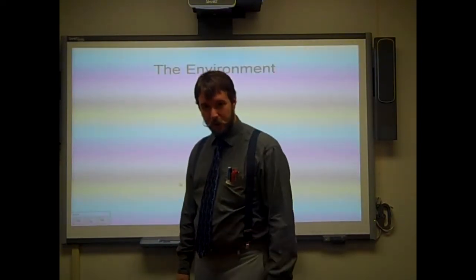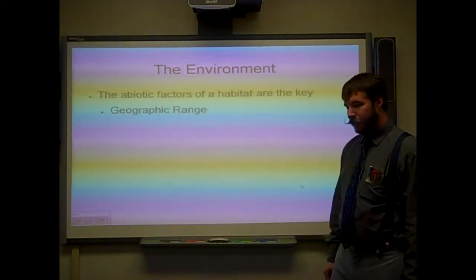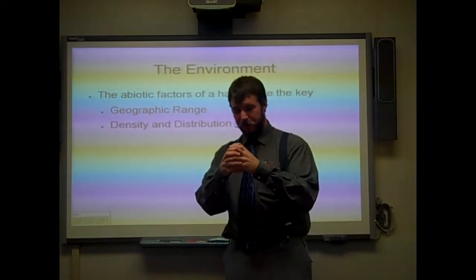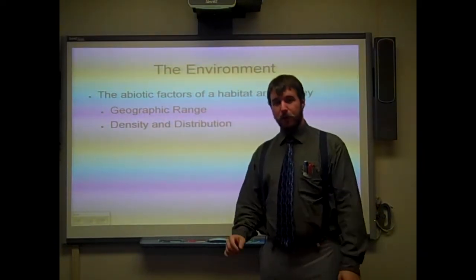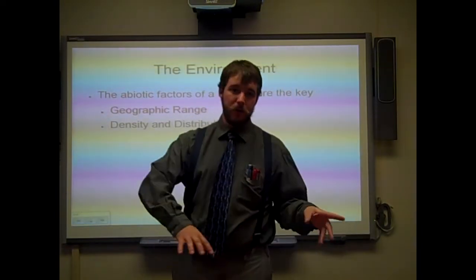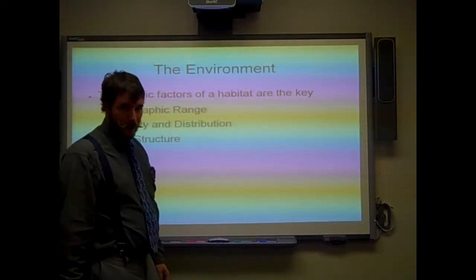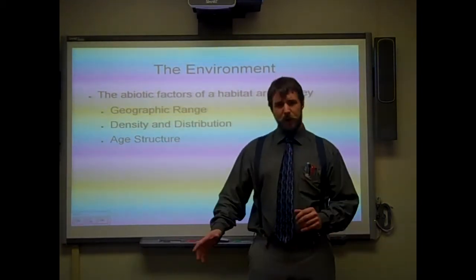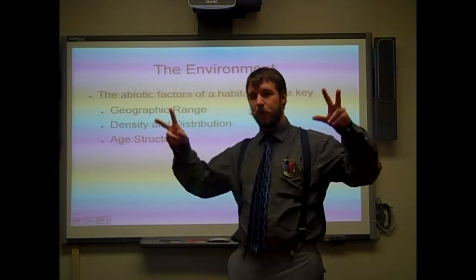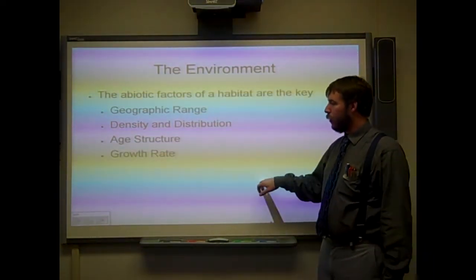First thing is first: keep in mind that the environment is still the number one most important factor in determining what is possible for populations. The big one is geographic range — that's what area they can actually live in. Then density, which is how thickly they can be in there — that's a unit of how much per how much space you have. Distribution would be whether they're in this or that area within that geographic range, whether they like certain areas a little more or a little less. And then age structure, which looks at whether most members of the population are really old or really young, and what members seem to be most successful. So those are the main factors that the environment can control, along with the growth rate.